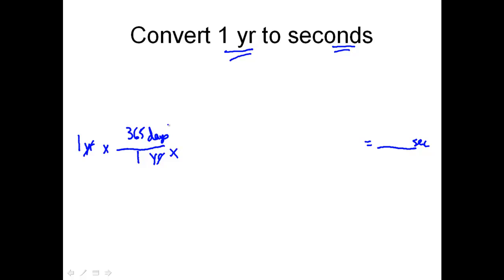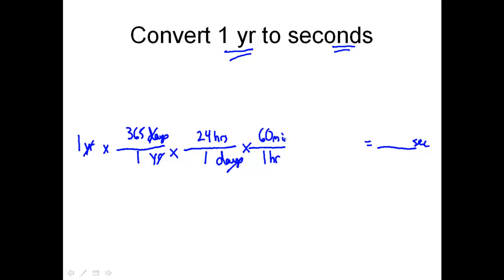Days doesn't match the ending unit seconds, so I need to cancel days by putting days at the bottom. In one day there are 24 hours. Days are canceled, and now I'm in hours. I've got to continue breaking this down until I reach seconds. In one hour there are 60 minutes. Hours are canceled. Now in minutes, I need to go one step further: in one minute there are 60 seconds. Minutes are finally canceled, and I stop here because the units match my target.